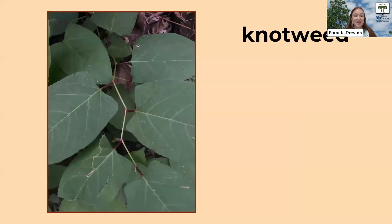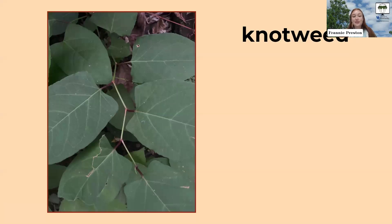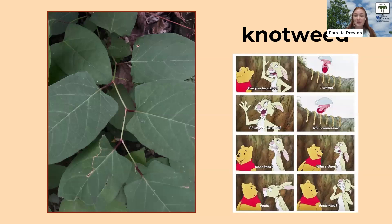One funny example of just how tricky this conversation can be is knotweed — K-N-O-T-weed. Knotweed is a weed because it is an invasive plant. It grows along riparian areas and, like its name suggests, it forms really dense tangles. However, it's a little bit confusing when you're having conversations out loud about knotweed, because it is a weed but its name suggests otherwise.